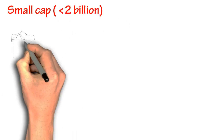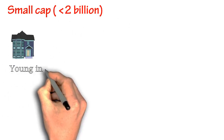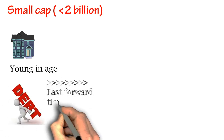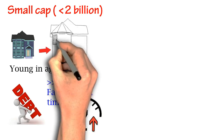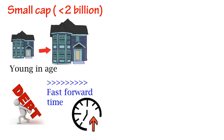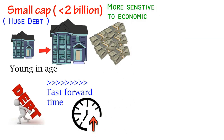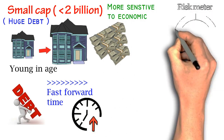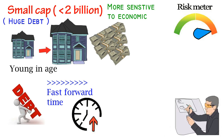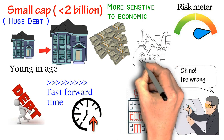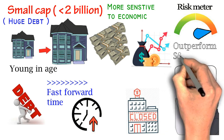Small cap consists of companies that are young in age. These companies normally incur huge debt to speed up their growth rate and generate a great deal of profit in a shorter time. Because the company incurs huge debt, this kind of stock is rather sensitive to economic crashes. Hence, small cap stock has the highest risk — if something goes wrong during operations, they can end up in bankruptcy. However, speaking of rate of return, small cap stock will definitely outperform the S&P 500 if they have survived all economic crises.